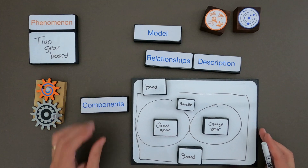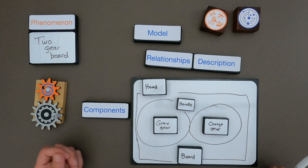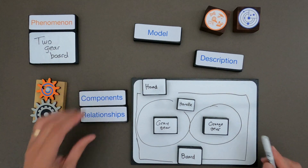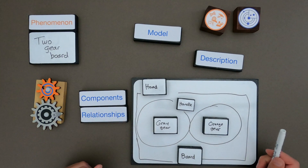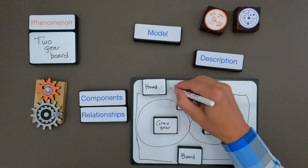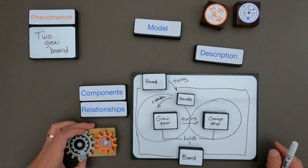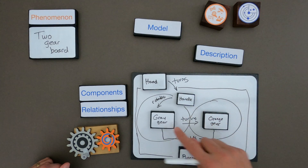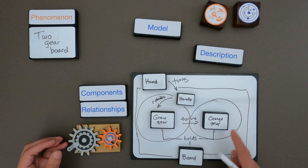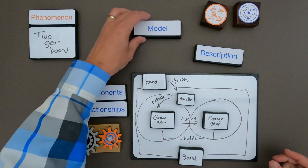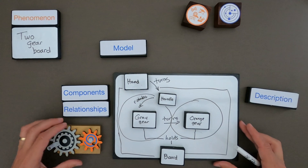Now we've got a rough drawing of all the components: the gray gear with the handle, the orange gear, and the board. The next thing I have to do is identify all the relationships - how is the hand related to the handle, to the gear, the orange gear, and the board. So I draw those in. Now I've got the relationships: my hand turns the handle, which rotates the gray gear, which turns the orange gear, and the board holds the gray and orange gear together. Now all I need is a description of how my model works.